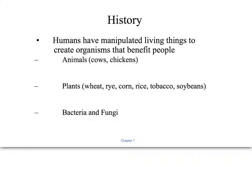Throughout history, humans have manipulated things to create organisms or different species that might benefit people. We've done it since the beginning of human time. The idea has been that we breed animals to do what we want them to do — we might breed cows that make a lot of milk, or chickens that make the most eggs, or have the biggest legs for the most meat. Most of that's been done through traditional breeding, not using biotechnology.